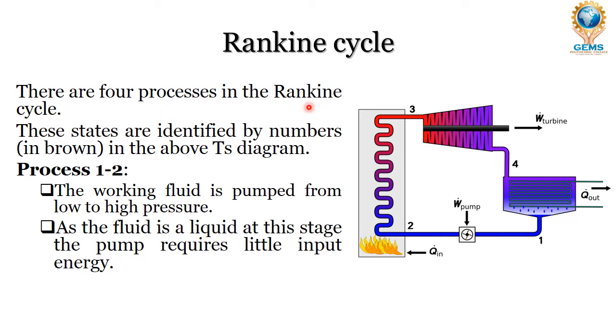Let us see what are the four processes in the Rankine cycle. These states are identified by numbers in the T-S diagram.